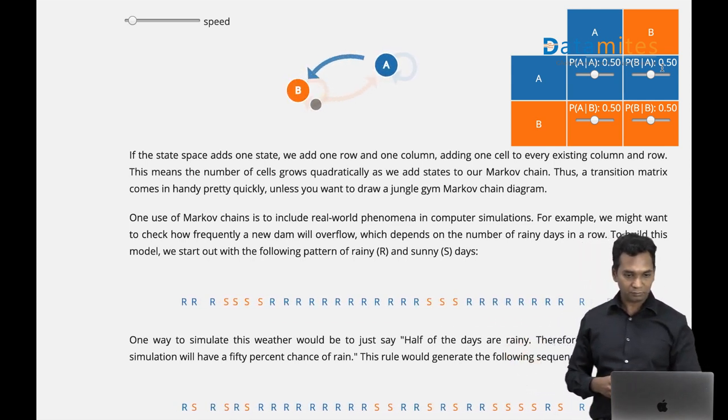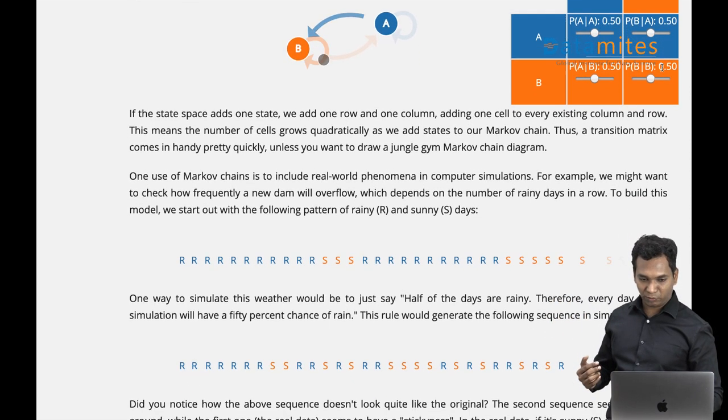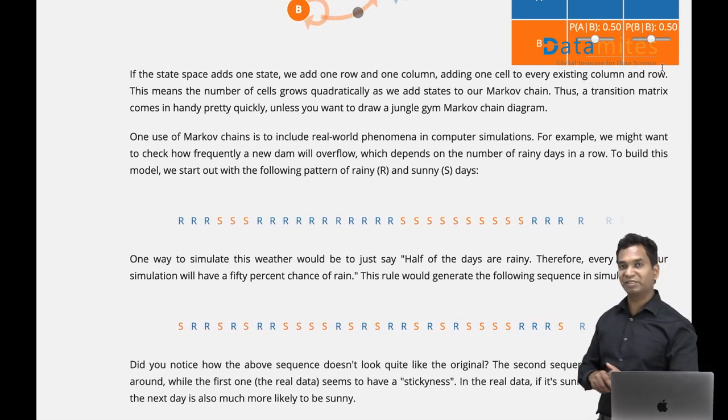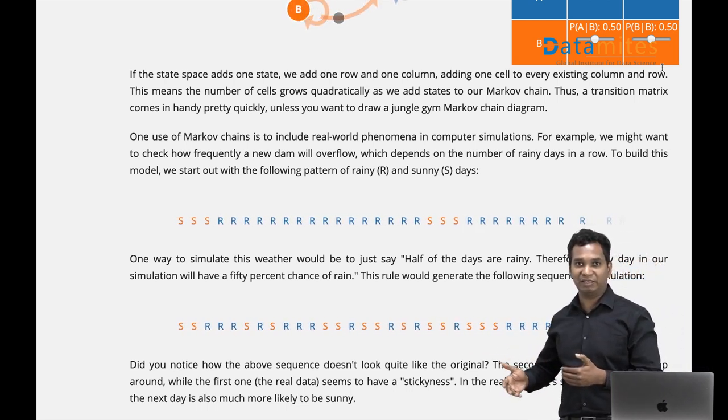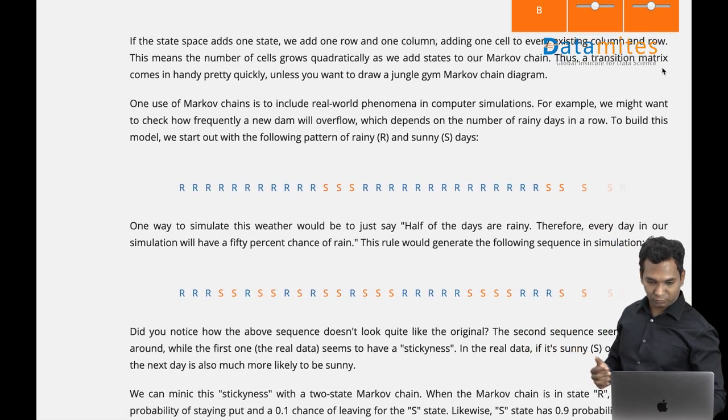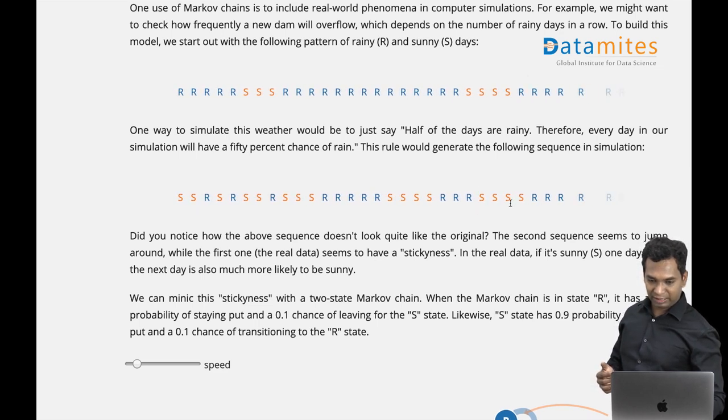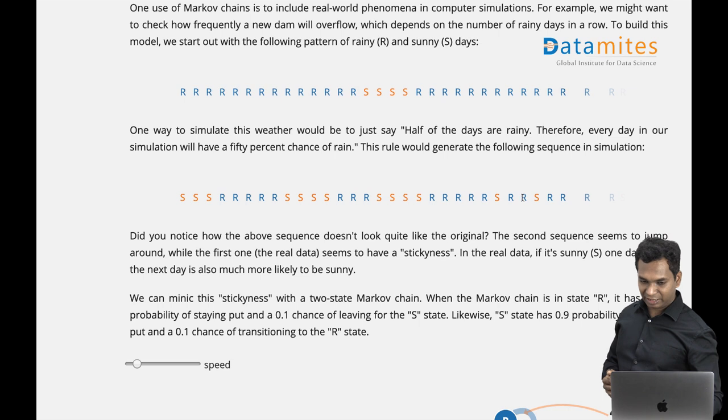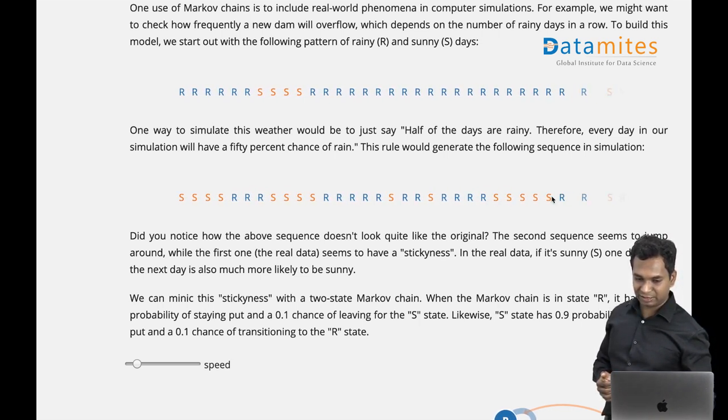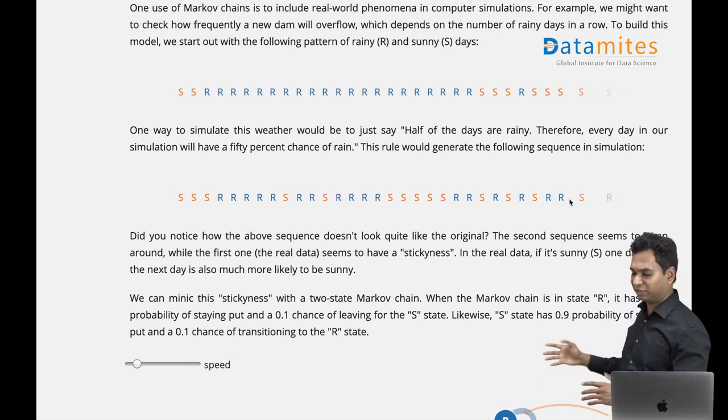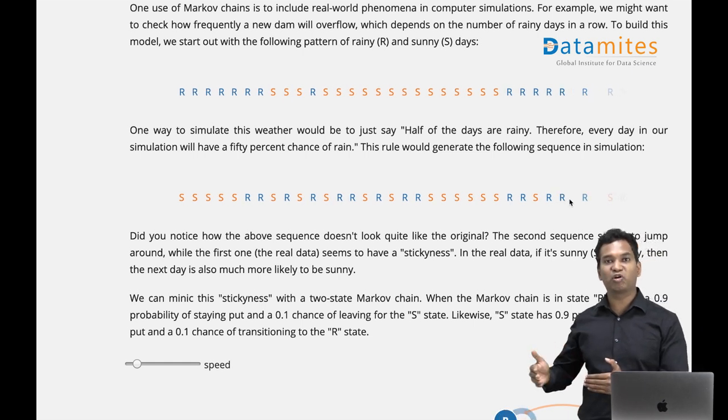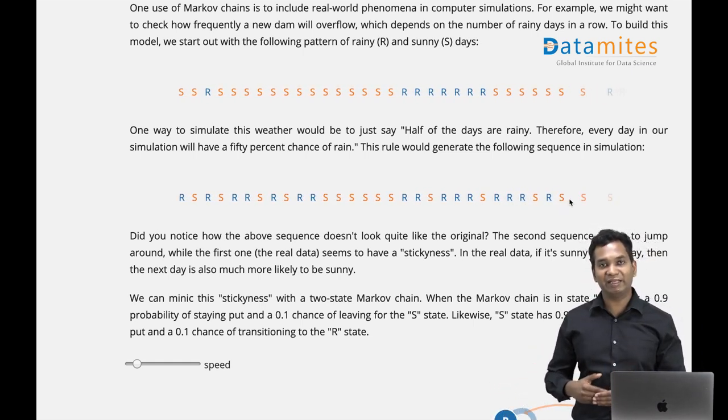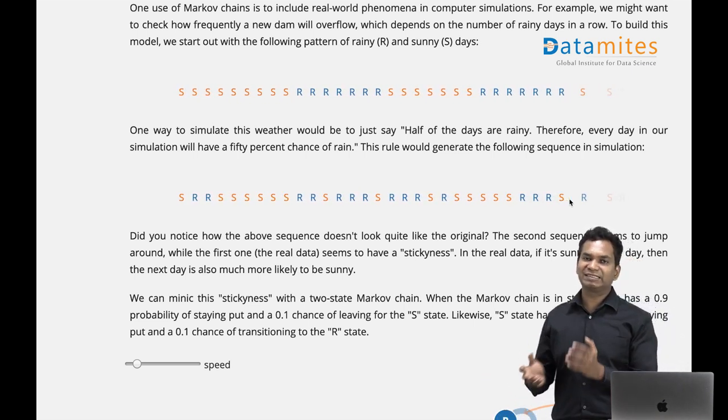There is another example which is very interesting: what will be the next day—sunny or rainy? Let's say today is sunny and there's a 50-50 chance of sunny and rainy. But in a real scenario, if today is sunny, the chances of being sunny tomorrow is higher, isn't it, when compared to rainy? And if today it's raining, tomorrow the chance of raining is higher than compared to sunny. It's a kind of sticky state, isn't it? If you have a sunny day, chances of having sunny next is higher.